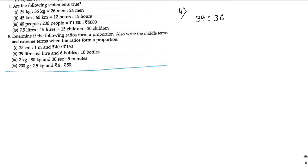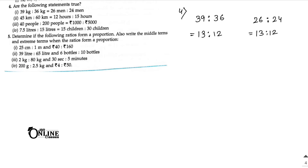Sum number 4, first statement: 39 is to 36 — divide by 3 — gives 13 is to 12. And 26 is to 24 — divide by 2 — gives 13 is to 12. Both equal, so it's true.